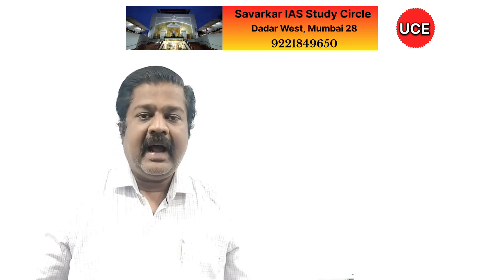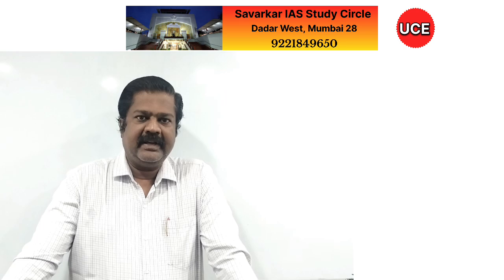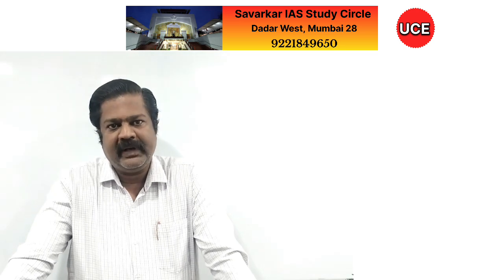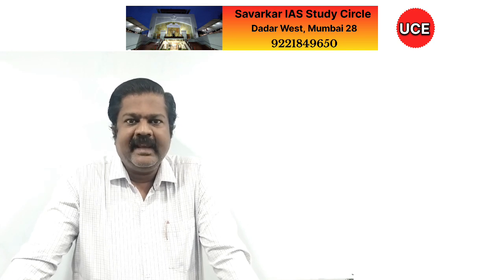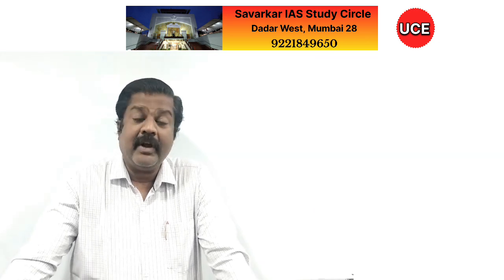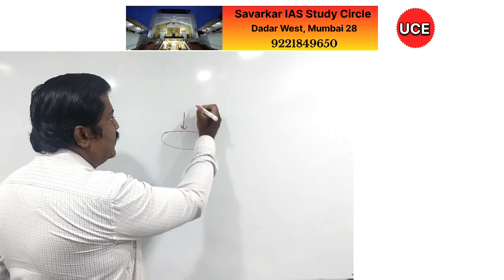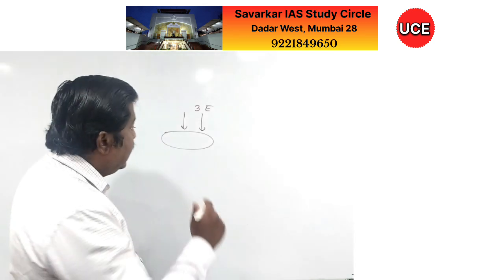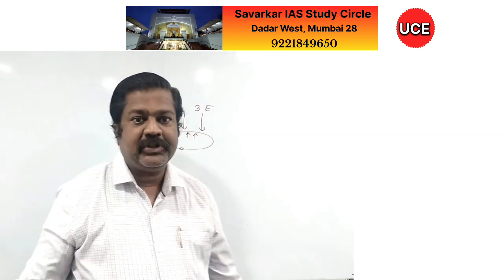Atmospheric pressure is very very high. In a further lecture of physics we are going to discuss the actual value of atmospheric pressure. But right now it must be clear that pressure is equivalent to nearly the weight of three elephants. So suppose an ordinary glass tube is kept — atmospheric pressure, almost equivalent to three elephants pressing down the tube — but it is not breaking, because there is some opening and from inside the same pressure is balanced out.